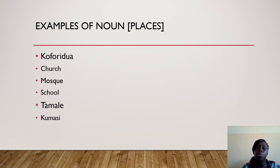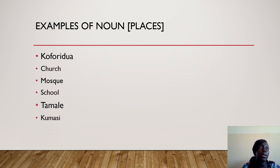Examples of nouns as in places. We have Koforidua, church, mosque, school, Tamale and Kumasi. It is a place where people gather. Koforidua is a township, so people do gather. Church — we gather to worship. Mosque. Tamale is a place where people live. Kumasi and the rest. You are not restricted at all, you can add more examples.